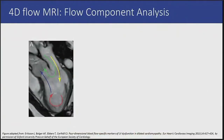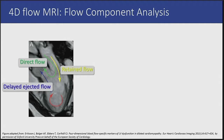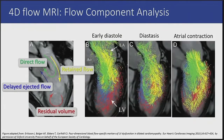4D-flow MRI is also used to visualize and quantify left ventricular hemodynamics. A blood particle traveling through the left ventricle can follow different paths, and one path might be more efficient than the other. Based on the location of a particle at the beginning and end of the cardiac cycle, it can be classified into direct flow, retained flow, delayed ejected flow, or residual volume. Here you can see pathline visualizations of these components in a healthy 50-year-old woman. Flow component analysis may prove useful for the evaluation of complicated valvular heart diseases like low-flow low-gradient aortic valve stenosis or combined mitral and aortic valve disease.